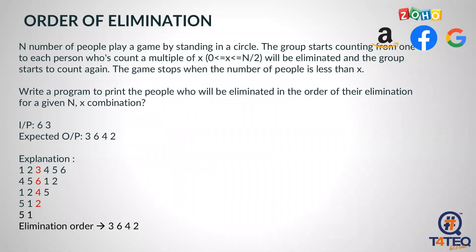So, do the question: Order of Elimination. A number of people playing a game by standing in a circle. A group starts counting from one to each other; each person who counts a multiple of X will be eliminated, and the group starts counting again. The game stops when the number of people is less than X. Write a program to print the people who will be eliminated in order. Given N=6, X=3, the answer is 3, 6, 4, 2.